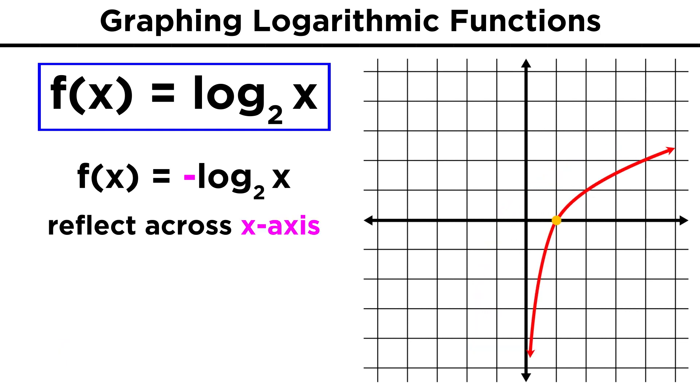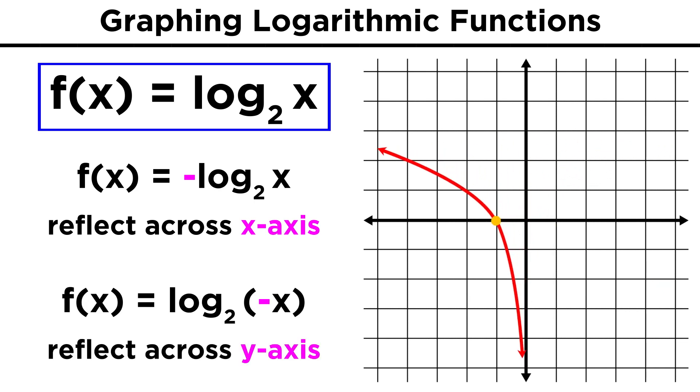A negative sign on the whole logarithmic term reflects the function across the x axis. But if it is in here, on the x itself, the function is reflected across the y axis.